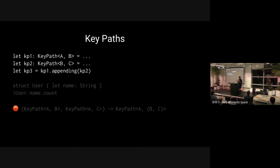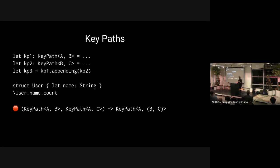Key paths are also composable. If you have a key path from A to B and B to C, you can use the 'appending' method to stick them together and get a key path from A to C. Even nicer — using backslash to generate a literal key path, you can use dot notation to compose key paths and go deeper into a structure. However, there are still things key paths can't do in user land, such as constructing a key path from A to (B, C) when you have key paths A-to-B and A-to-C. On the spectrum, key paths aren't quite at the 'very powerful' end we might hope for.